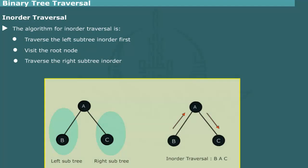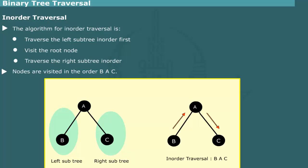The figure shows traversal of a simple three-node tree. First, the left subtree B is visited. Next, root A is visited. Lastly, right subtree C is visited. Thus, nodes are visited in the order B, A, C.